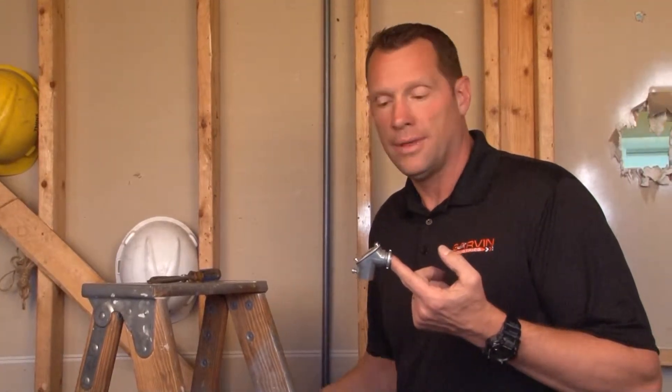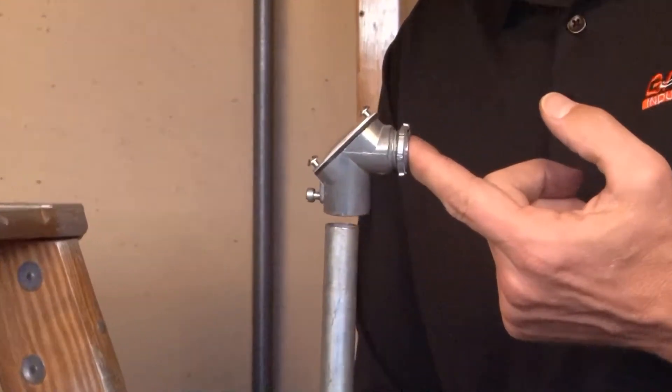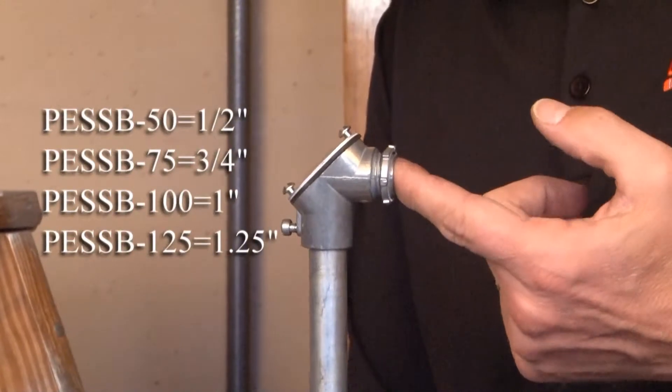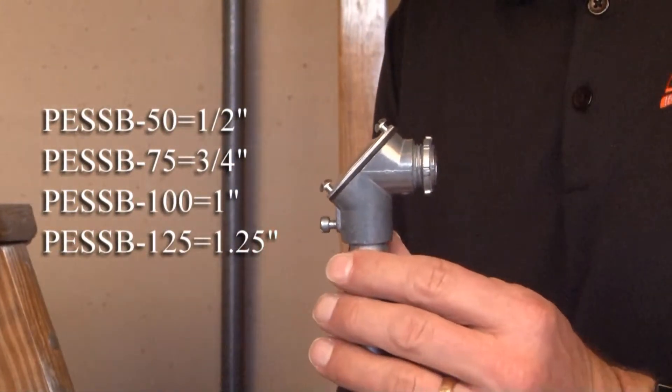PESS B50 is a 90 degree pull elbow that has a set screw provision for half inch EMT conduit. You simply slide in the half inch EMT conduit and you can now secure it using the set screw on the side.